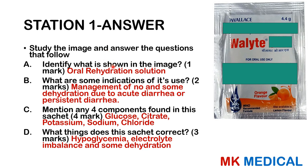ORS is used in the management of both no dehydration and some dehydration, which may be due to acute diarrhea or persistent diarrhea. It consists of glucose, citrate, potassium, sodium, and chloride. Remember, zinc is not present in ORS. The things it corrects include hypoglycemia, electrolyte imbalance, and some dehydration.